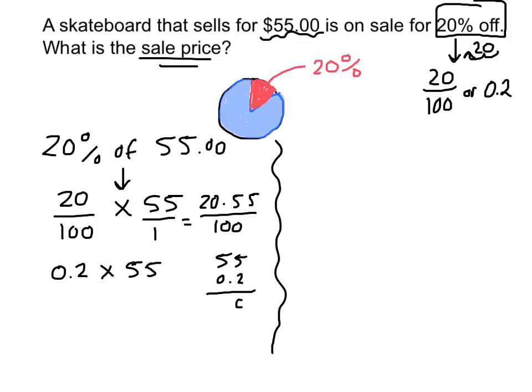2 times 5 is 10. Carry the 1. 2 times 5 is 10. Plus 1 is 11. Bring down the decimal. So I'm going to save $11. So to find the sale price, I would do $55 minus $11 to get $44.